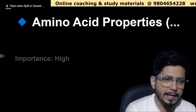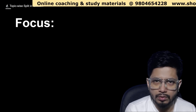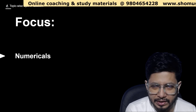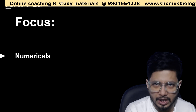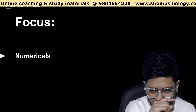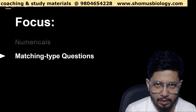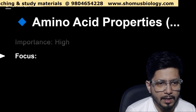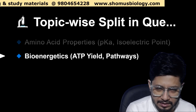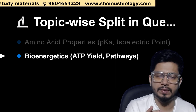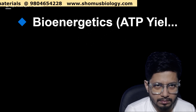The third topic is amino acid properties, where we cover the pKa values of amino acids and isoelectric point of amino acids. The importance level is high. The focus here is on numericals — particularly questions regarding the charges of amino acids or charges of polypeptides. Match-the-column type questions will also be there.